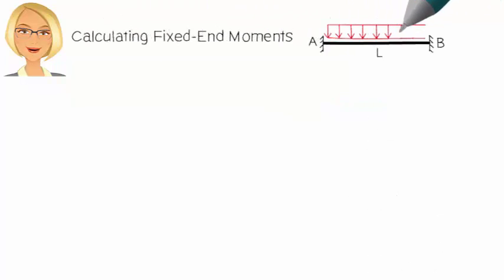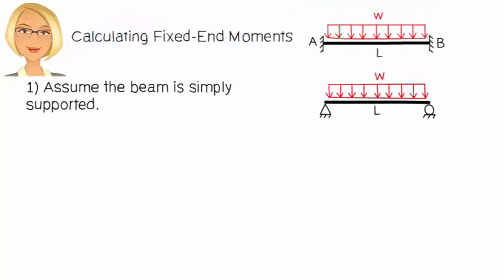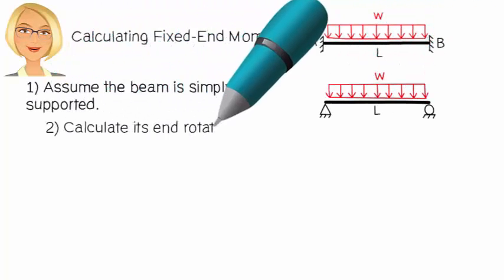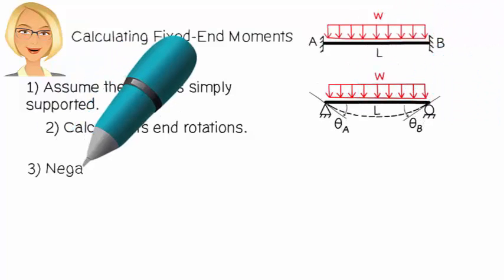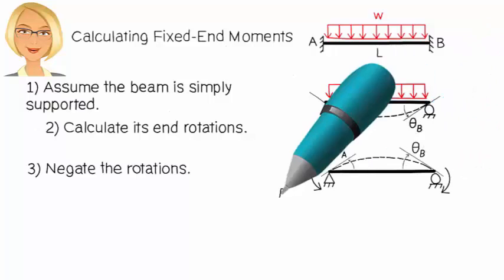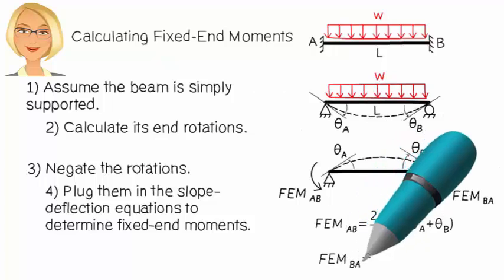In summary, to calculate fixed-end moments for a particular load, first, we assume the beam is simply supported and calculate its end rotations due to the load. Then, we negate the rotations and plug them into these slope-deflection equations to get the fixed-end moments.